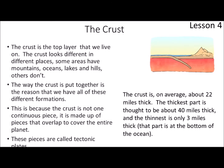Let's start with the crust. The crust is the top layer that we live on. The crust looks different in different places — some areas have mountains, oceans, lakes and hills and others don't. The way the crust is put together is the reason that we have all of these different formations. This is because the crust is not one continuous piece. It is made up of pieces that overlap to cover the entire planet. These pieces are called tectonic plates.